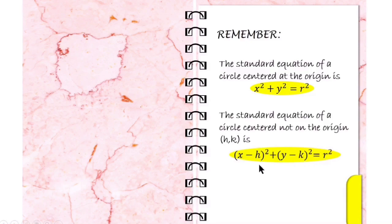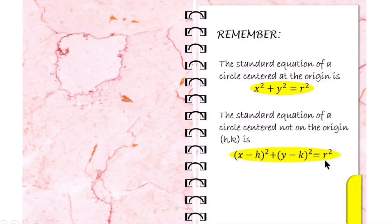This standard form of equation of a circle, not on the origin, can be presented in another form. We call it the general form of the equation of a circle. The nice thing about standard form is that, at a glance, it shows the center and radius of the circle. That is why it is convenient to use the standard form. However, another form called the general form is often the form in which the equation is given. So let's get to it.